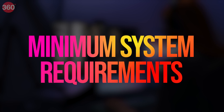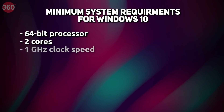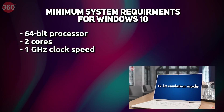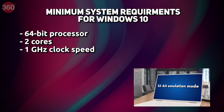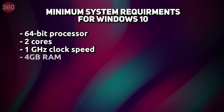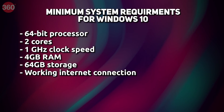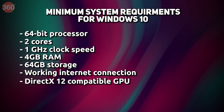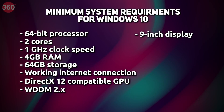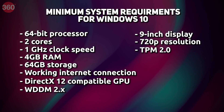Now that we've glossed over some of the new changes in Windows 11, it's important to talk about the minimum system requirements. You need a 64-bit processor with minimum two cores and one gigahertz clock speed. You will require a minimum of four gigabytes of RAM, 64 gigabytes of internal storage, and obviously an internet connection. A graphics card that is DirectX 12 compatible with WDDM 2.X. A display greater than nine inches with a minimum resolution of 720p. And finally, TPM — something we mentioned in the previous segment.